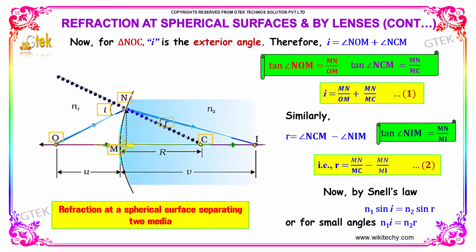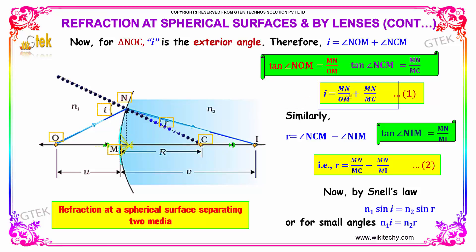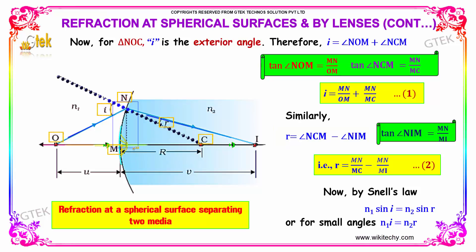Now, for triangle NOC, angle I is the exterior angle. Therefore, angle I equals angle NOM plus angle NCM. So tan of angle NOM is given by MN divided by OM, and tan of angle NCM is NM divided by MC. So I equals MN divided by OM plus MN divided by MC. Similarly, R can be expressed as angle NCM minus angle NIM, giving NM divided by MC minus NM divided by MI.